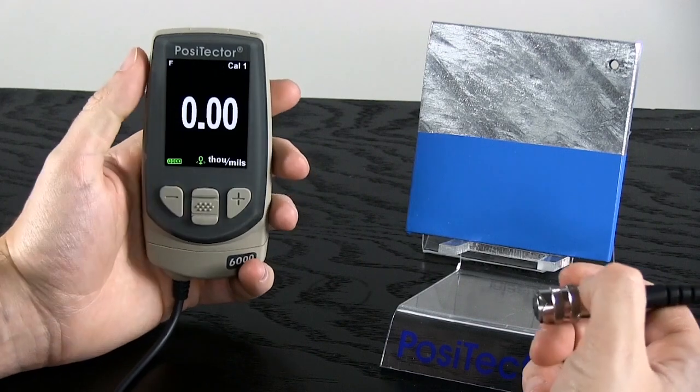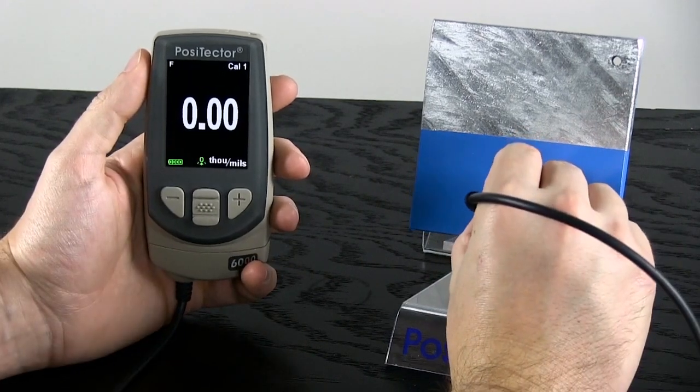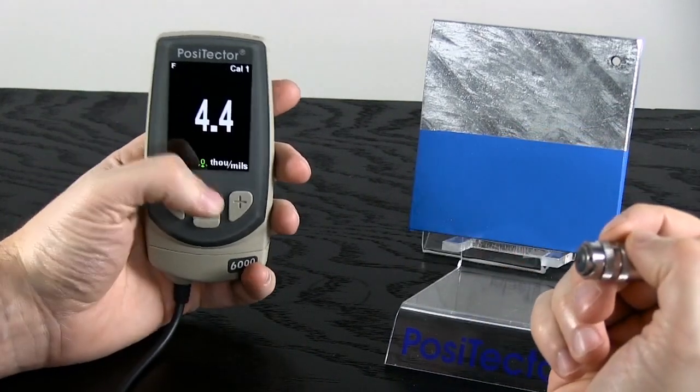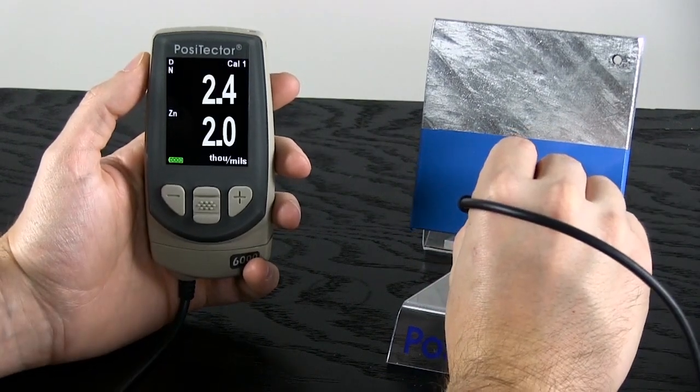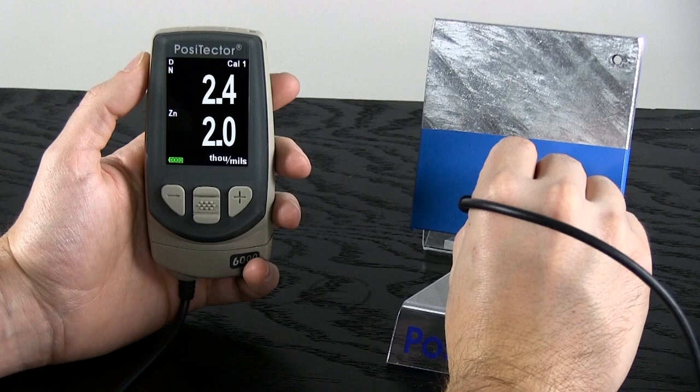With duplex mode off, the probe measures the total thickness of the coating system. With duplex mode on, the probe measures the two individual layer thicknesses.